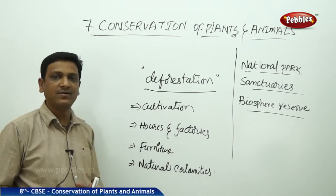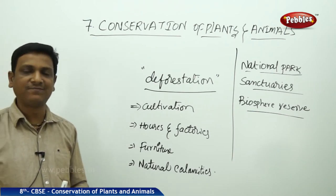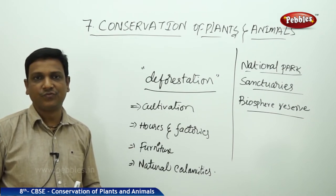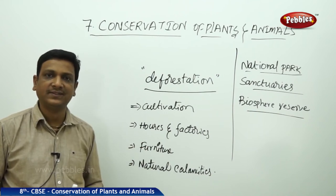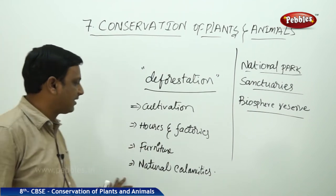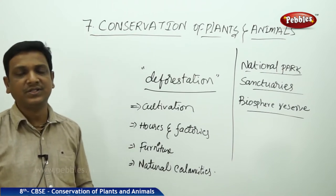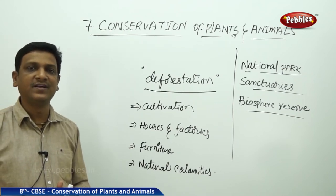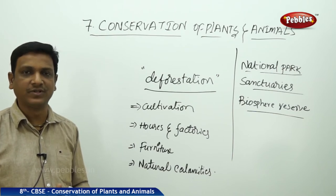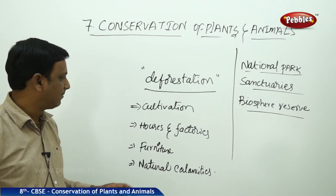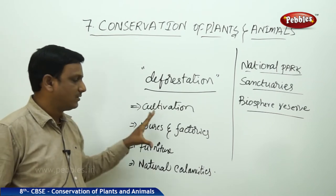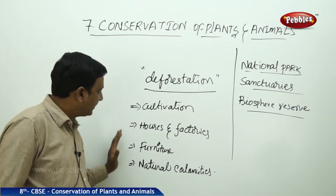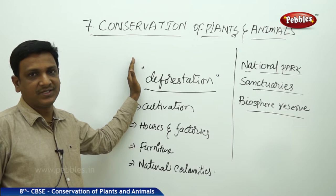Another reason for deforestation is the demand for furniture and wooden products — forests are cut for wood used in furniture, paper, and other purposes. Finally, natural calamities like forest fires destroy forests in large quantities, and severe floods can also damage forests. However, that last one is natural, while the above reasons are all due to human intervention and human activities.